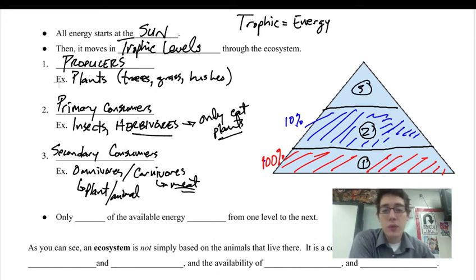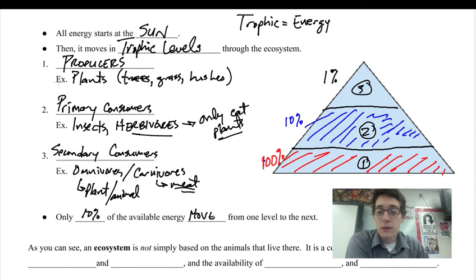So now up here at the third level, so if we go from 100 to 10%, then we're going to drop from 10 to 1%. Very, very little energy. So we can see that only 10% of the available energy moves from one level to the next. So we're dropping a zero every time. We're dividing by 10 every single time. So if we have 100% of total energy down here, only 10% will move into the secondary level, and then only 1% moves to the top.